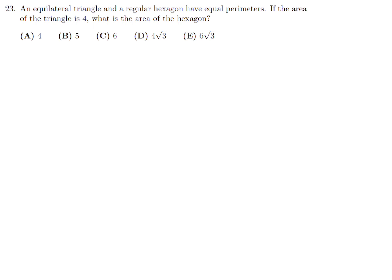An equilateral triangle and a regular hexagon have equal perimeters. If the area of the triangle is 4, what is the area of the hexagon? So, let's draw an equilateral triangle. And first, let's discuss this. Now, I'll just call the side length X. And I'm going to need to draw a perpendicular from the top to the bottom like this.